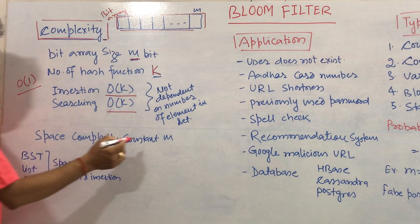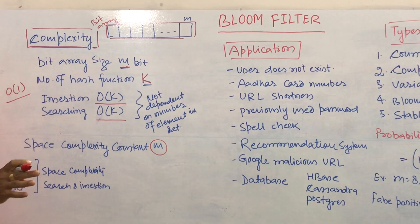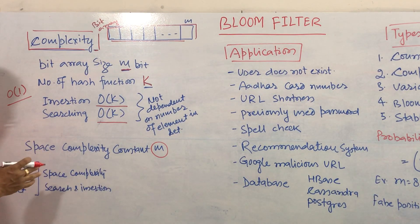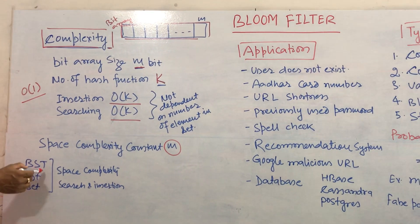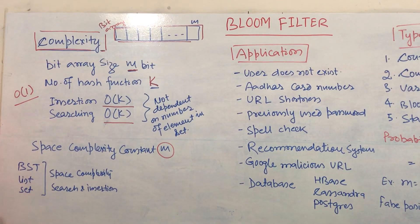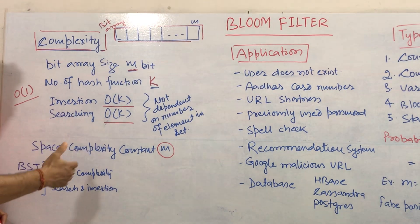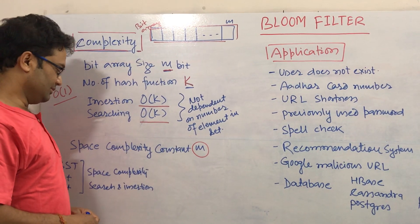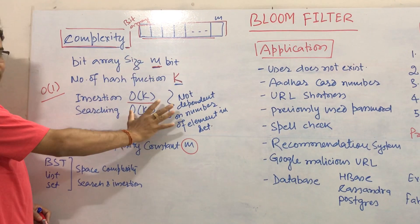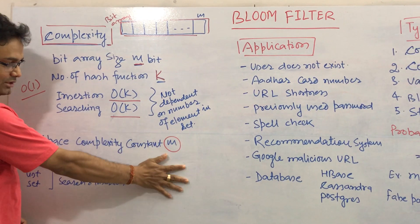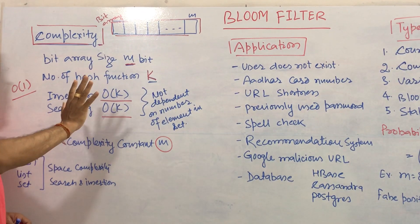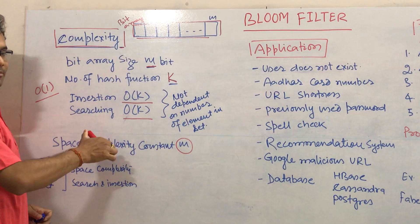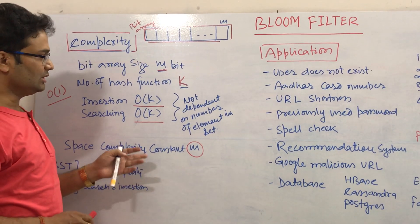The space complexity is constant, and it does not depend upon the number of inputs in your dataset. In contrast, if you use data structures like binary search tree or a list, as the number of inputs grows, your space complexity will increase and your searching complexity will increase. But in the case of Bloom filter, it is always constant — space complexity is constant, and the insertion and searching complexity is constant. This is the very beautiful part of the Bloom filter, and that is the main reason why in many applications we use the Bloom filter.